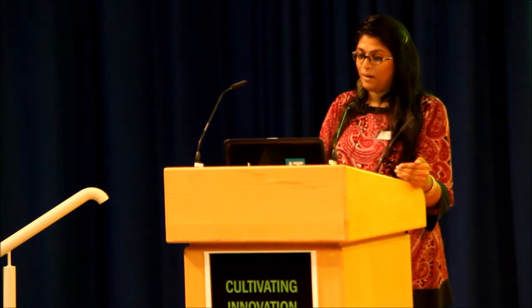By comparing the visualizations used in early plant patents to those accompanying more recent utility patent applications, and by tracking changes in patent illustration with respect to their accompanying text — what is the relationship between the drawing and the text, what kind of meaning and value does the drawing have — I'm hoping to demonstrate a shift from pure description to explication in the underlying innovation. Questions I'm asking include: how do patent drawings fit into the history of representation and scientific practice, which historians of science have not really taken into account? Also, how has the role of the image in the patent changed with respect to plant science, patent law, and technologies of visualization? Because the 20th century has seen huge changes in what can be visualized and understood about biological material and processes.